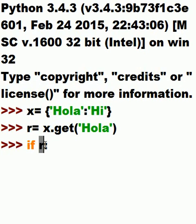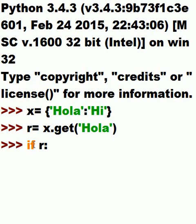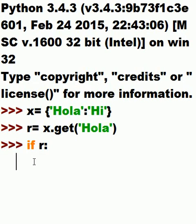If there's something in r and that's true, then I want to do the following. I hit enter and the cursor jumps to a funny position, so I hit backspace and then the spacebar four times for my indentation. The system sees the 'if' as being against the wall, and now I'm properly indented four spaces under it. I key in print r.